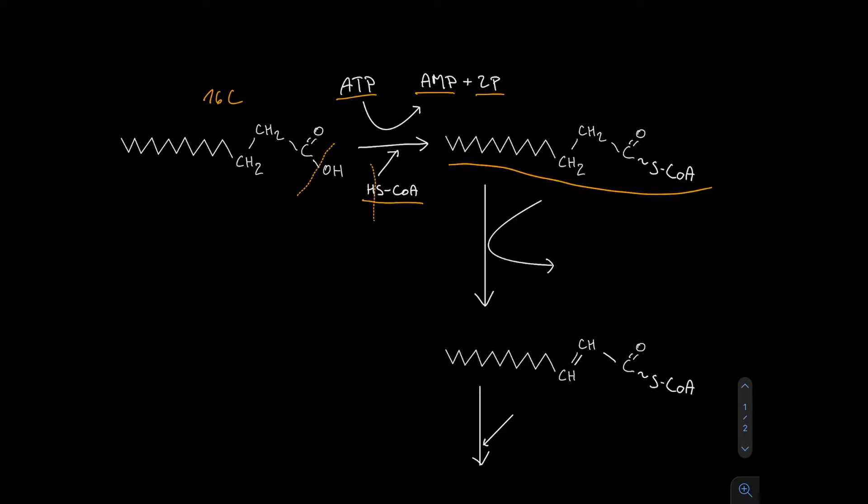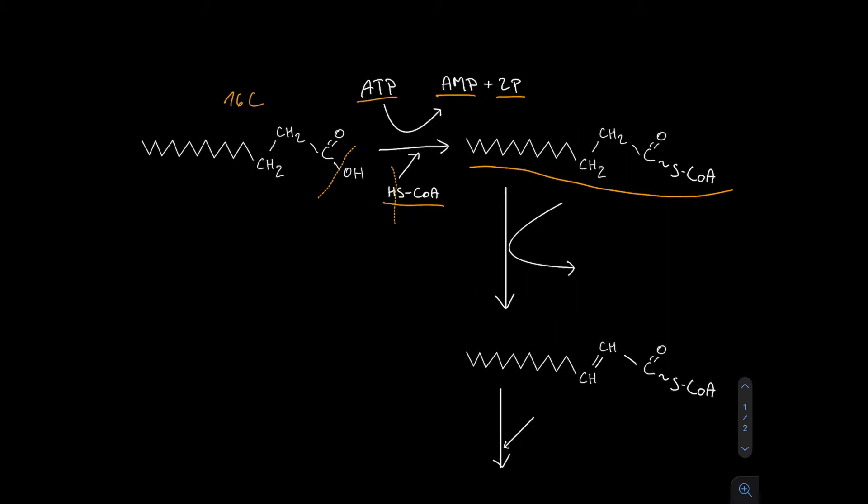Now that we have activated this molecule of carboxylic acid with this coenzyme A, we can start the process of cyclic beta oxidation. We have four reactions, the first of which is dehydrogenation, where we have FAD ripping away these two hydrogens. We get this double bond right here while forming FADH2. So we have formed this double bond right here while ripping away those two hydrogens, and we gain one molecule of FADH2.